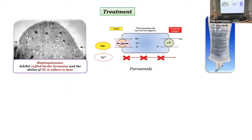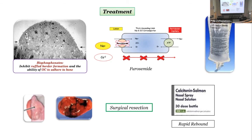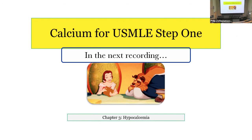Treatments for hypercalcemia: furosemide with saline to promote sodium and calcium wasting while counteracting increased resorption. Bisphosphonates inhibit osteoclasts by inhibiting the ruffled border so osteoclasts can't adhere — we'll cover that in the MSK section. If the cause is primary hyperparathyroidism, resection is indicated. Calcitonin is also used but only as a temporizing measure due to rapid rebound.